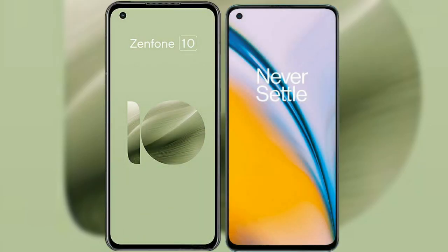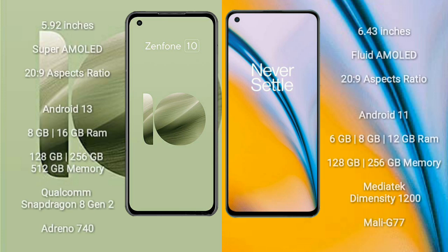In this video, I will compare the new Asus Zenfone 10 with the OnePlus Nord 2. The Asus Zenfone 10 comes with a 5.92-inch Super AMOLED display with a 20:9 aspect ratio. The OnePlus Nord 2 comes with a 6.43-inch flat AMOLED display and a 20:9 aspect ratio.